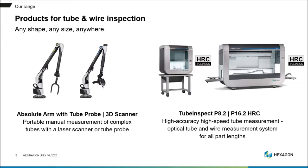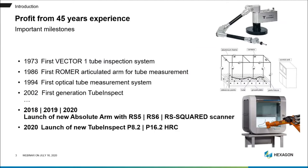On the right-hand side you see the more or less automated solution: Tube Inspect. We launched a new generation of Tube Inspect a few weeks ago — the P8.2 and the P16.2 in the HRC solution, which means with the highest resolution of 12 megapixels. Since the first generation of Tube Inspect was on the market, we have continuously developed this solution.